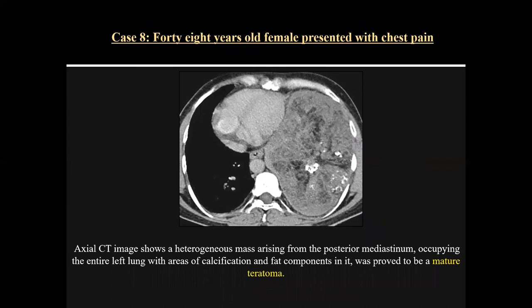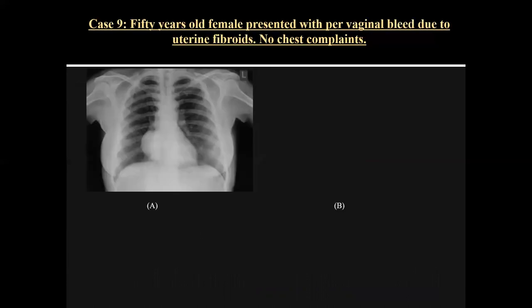Case eight was a 48-year-old female with chest pain. On axial CT image, there was a large heterogeneous mass in the posterior mediastinum occupying almost the entire left lung with areas of calcification and fat component. Given the heterogeneous mass with calcification and fat, this was a case of mature cystic teratoma.